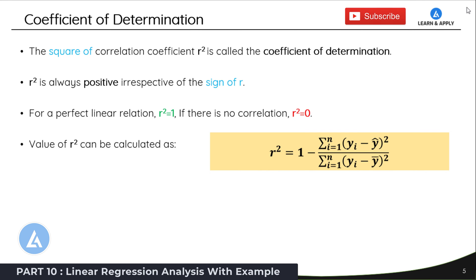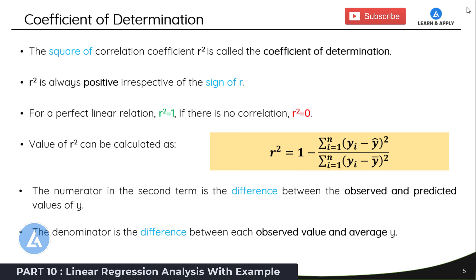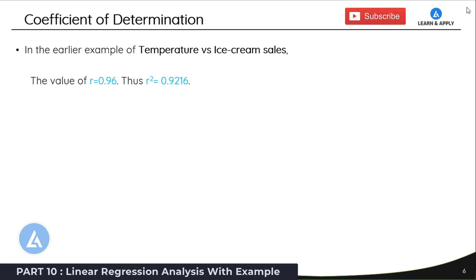R² = 1 minus [summation from i=1 to n of (yi minus y-hat)²] divided by [summation from i=1 to n of (yi minus y-bar)²]. The numerator in the second term is the difference between the observed and predicted values of y, whereas the denominator is the difference between each observed value and average y. From the correlation study of temperature versus ice cream sales, the value of r was 0.96, and squaring this term gives R² as 0.9216.